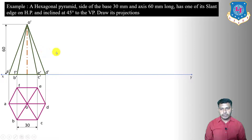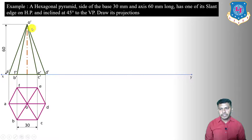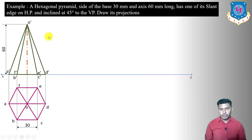For the second stage, we take the condition with the horizontal plane. The pyramid must have one slant edge on HP. We take the slant edge onto the XY reference line from the front view. The slant edges O'–A' and O'–D' give true length because their plans OA and OD are parallel to the XY reference line, meaning they are parallel to VP, so their front views show true length. We will take slant edge OD onto the XY reference line.